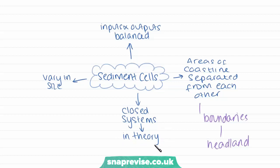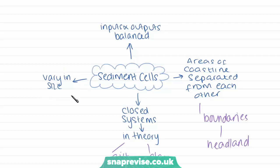By being a closed system, sediment stays within the cell and is not being transported out of it. This is only in theory, because in reality really small particles like silts and clay can actually be transported over long distances using very low energy — so these small particles can be transported in and out of the sediment cell. But it's usually the larger sediments, such as sand, which remain within the cell. These sediment cells can vary in size from merely a cove on a coastline to an entire stretch of coast.